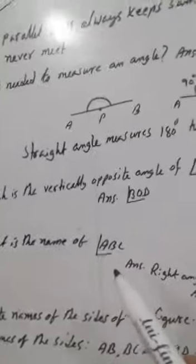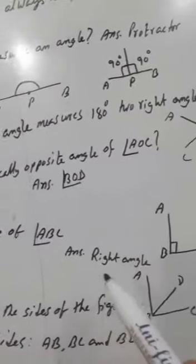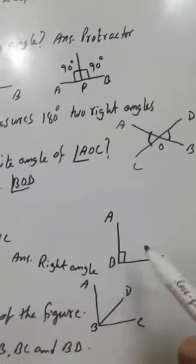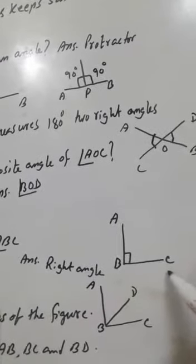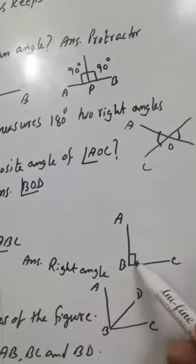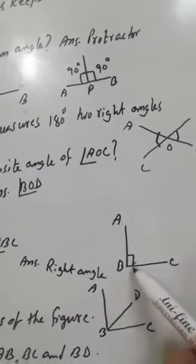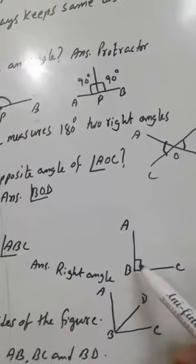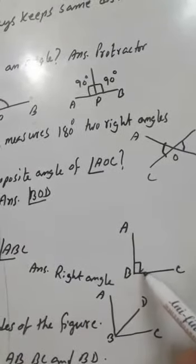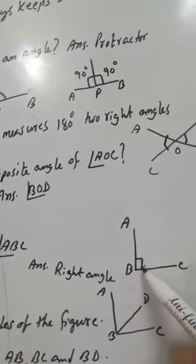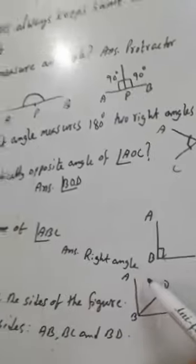What is the name of angle ABC? This angle ABC has a right angle sign, which means it is 90 degrees. Therefore, angle ABC is a right angle.